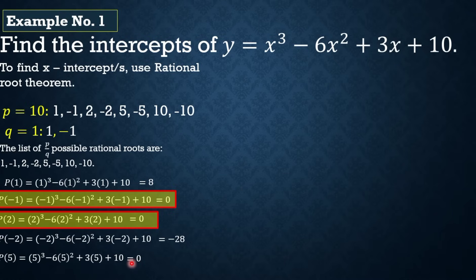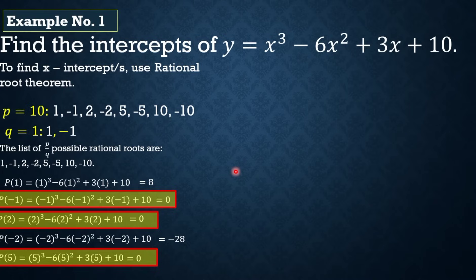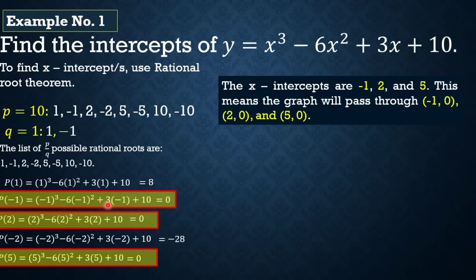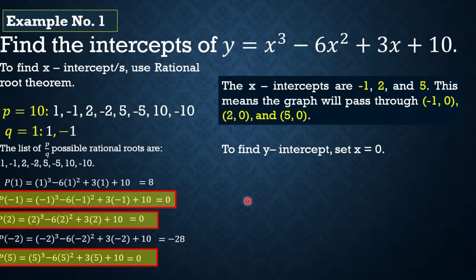Proceed tayo kay 5: 5³ - 6(5²) + 3(5) + 10 = 0. So si positive 5 ay kasama. Dito titigil na tayo kasi nakakuha na tayo ng tatlong 0 — hanggang 3 lang ang possible na x-intercept dito. So the x-intercepts are negative 1, positive 2, and positive 5. This means that the graph will pass through (-1, 0), (2, 0), and (5, 0).